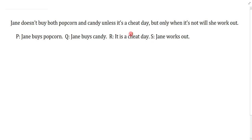Jane doesn't buy both popcorn and candy unless it's a cheat day but only when it's not will she work out. So I have lots of things I need to look at - the doesn't both which is just a variant of not both, the unless, this comma but, and this only when it's not. I'll just mark off the only when and leave that it's not on its own.